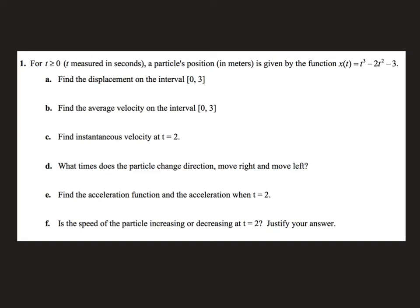Our first review question is about motion, and it is an analytical question, meaning we don't have a graph — we're doing it from an equation. We're given a position function, and part A wants the displacement. Displacement is just the difference in position from 0 to 3, this is my time interval. So I have to find my position at 3 and my position at 0 and subtract the two. x of 3 is 6, minus x of 0 is negative 3, so my displacement is 9.